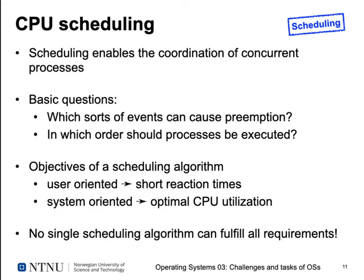CPU scheduling enables the coordination of concurrent processes. Concurrent processes is just an illusion — an abstraction — created by switching between processes fast enough that the user doesn't notice. The basic questions are: which events can cause preemption, and in which order should processes then execute? This depends on what you want to do with your computer. A scheduling algorithm can be user-oriented (e.g., short reaction times on a desktop OS like Windows or Mac) or system-oriented (e.g., optimal CPU utilization for batch processing or web servers). No single scheduling algorithm can fulfill all requirements, so compromises must be made.